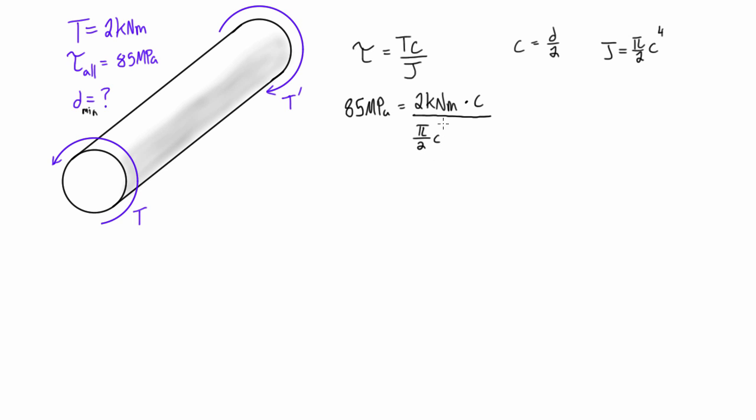Alright, so if we convert 85 megapascals to pascals and multiply it by π over 2, we're going to get 133,517,688 pascals. And I do that just because I want to check that the equation is going to work out in our favor.